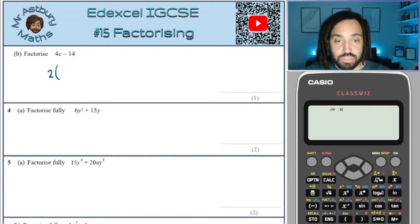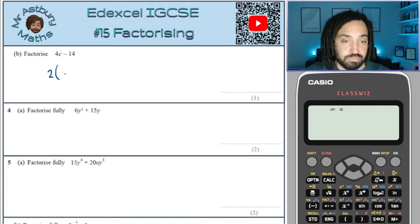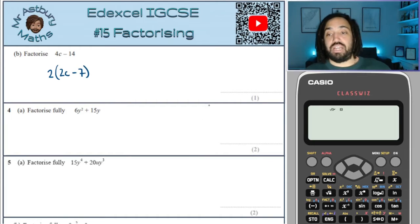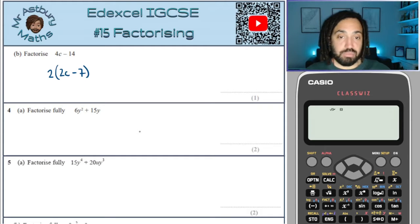Now what have I got at times two by to get 4C? Well it's got to be 2C. Now what have I got at times two by to get negative fourteen? It's got to be minus seven. And voila, that's one mark in the bag.